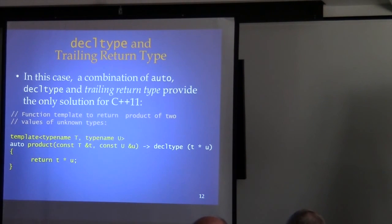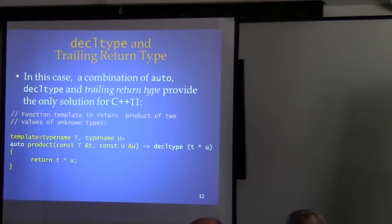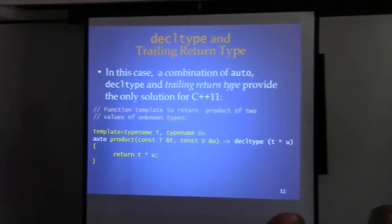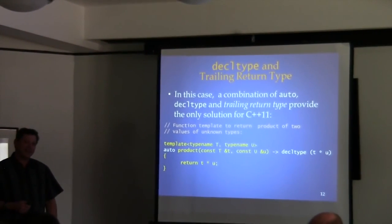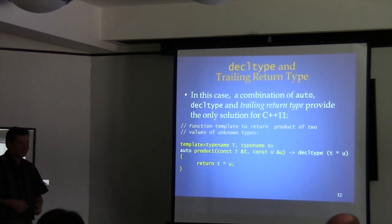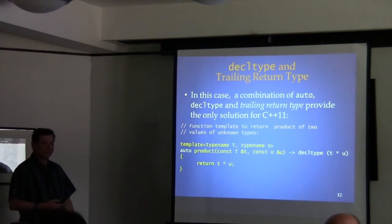Question: would the new use of auto break code that used the old auto storage-class keyword? Yes, absolutely — that's an example of a breaking change. But auto has been deprecated since C++98, so it's not a problem in practice. If you've got code using the old C-style auto, you'll need to do a little porting — and it'll be obvious, since you'll get a clear syntax error, not a silent breaking change.